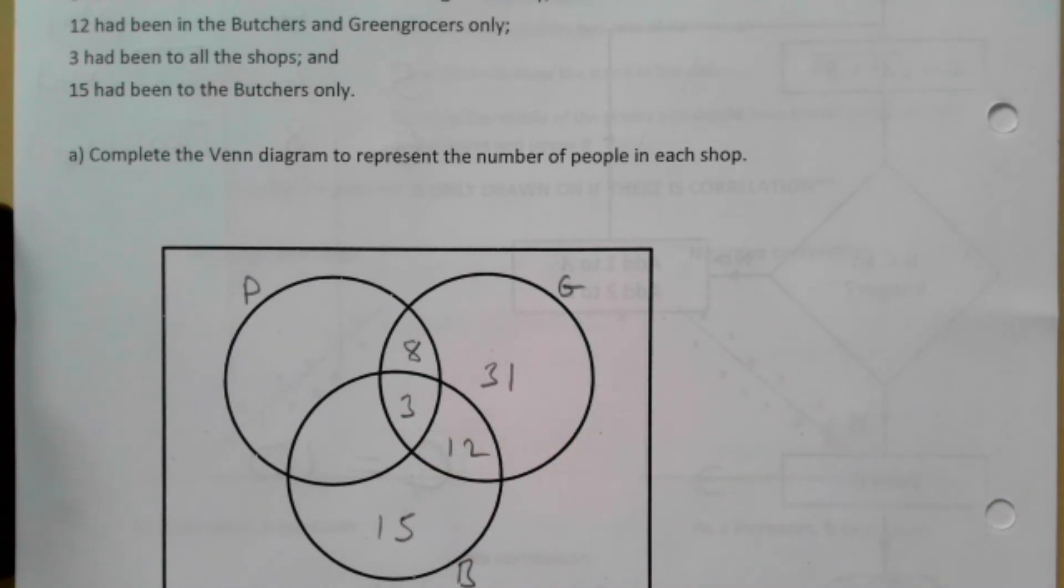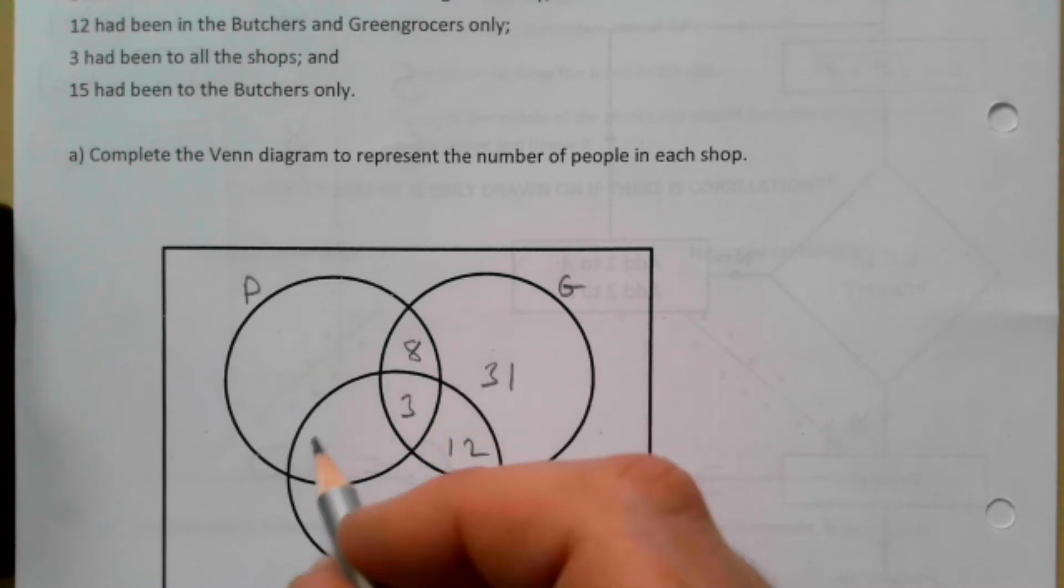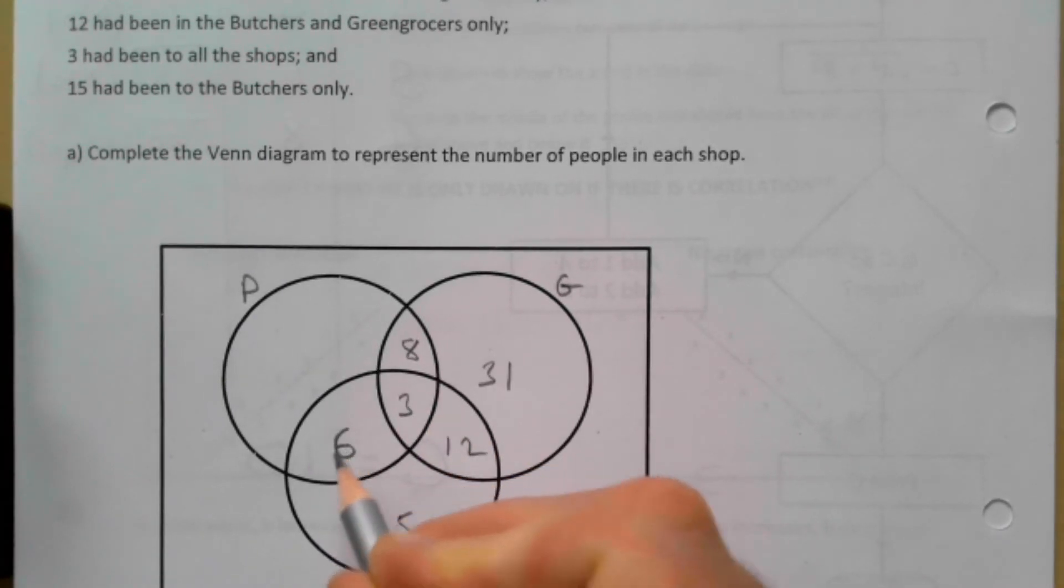It then says that 36 have been to the Butchers. So that's 15, 27, 30, so this here must be 6.